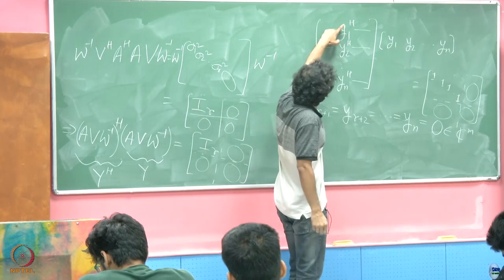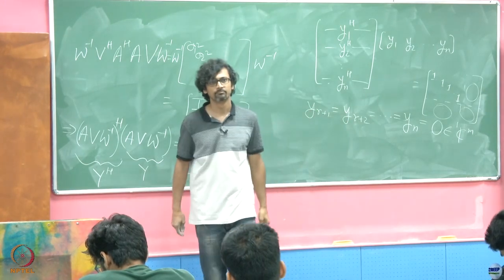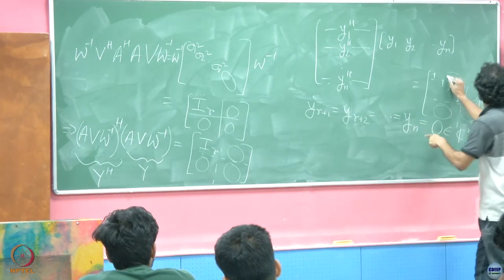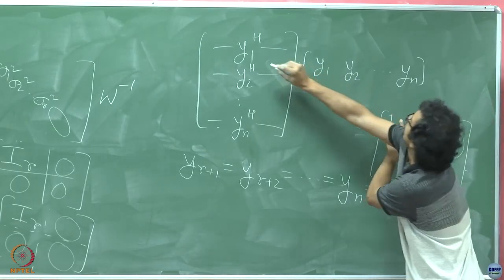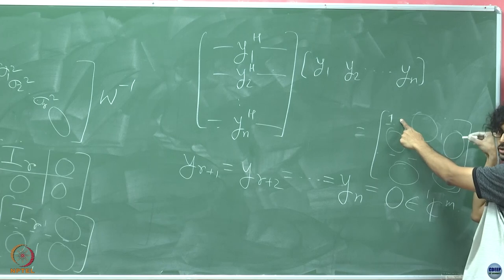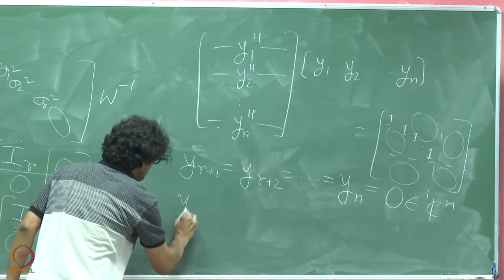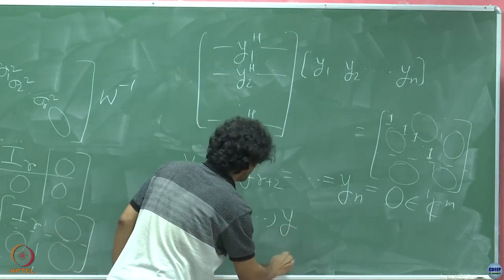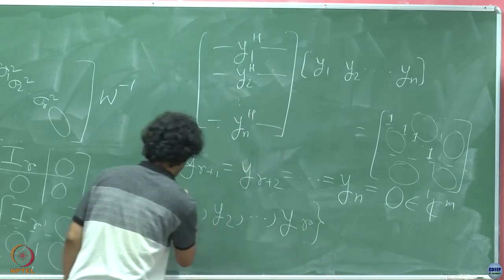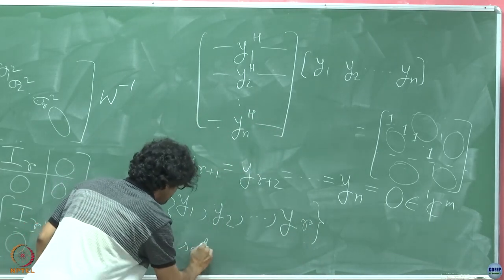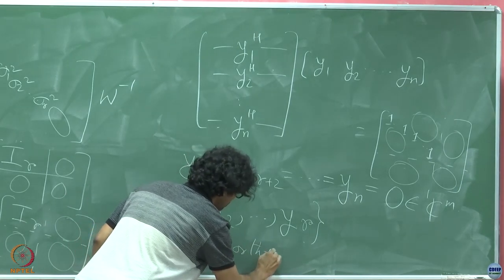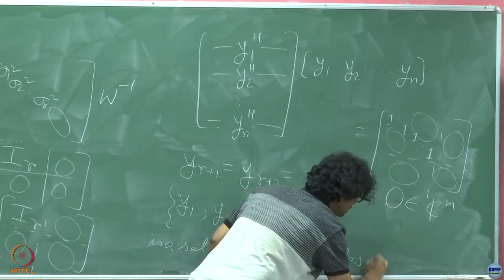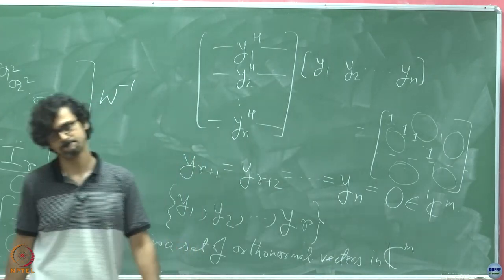Also what can you say about y1 through yr mutually? Aren't they going to be orthogonal to each other? Because the cross coupling terms here are all 0s. So we will also say that y1, y2 till yr is a set of orthonormal vectors in Cm.